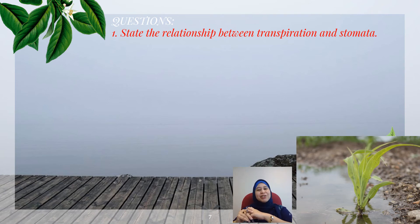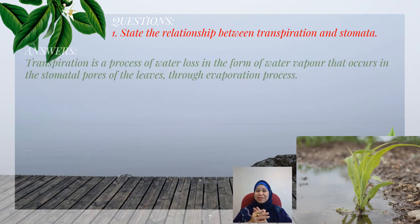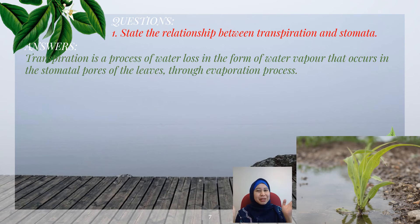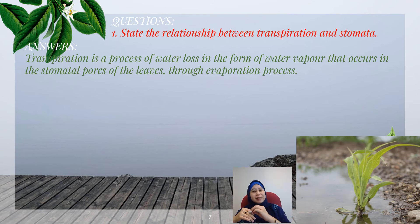We need to know the meaning of transpiration before we can relate it to stomata. The suggested answer is: transpiration is a process of water loss in the form of water vapor, and 90% of it occurs at the stomata pores of the leaves through the evaporation process.